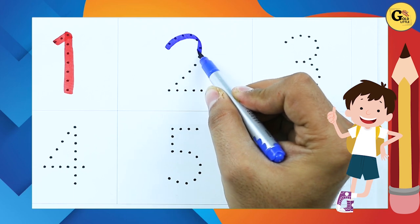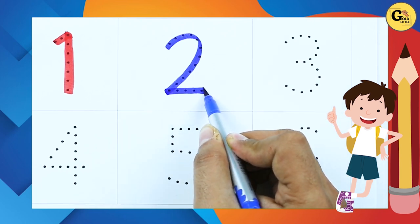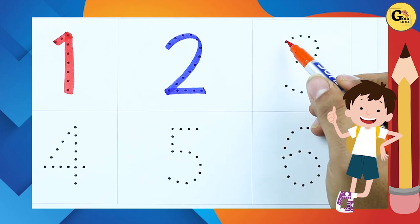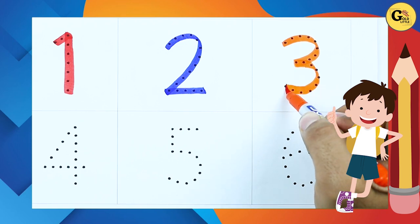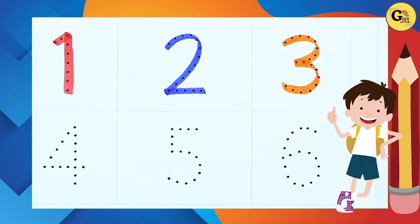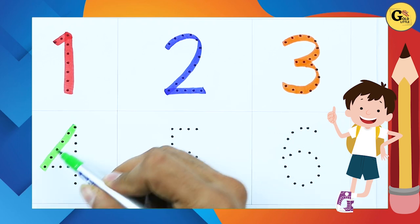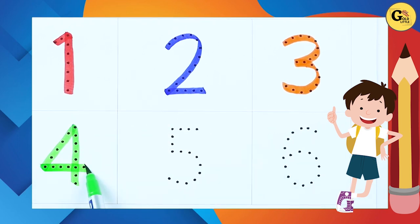It's number two with blue color. It's number three, yes, number three with orange color. It's number four with green color.